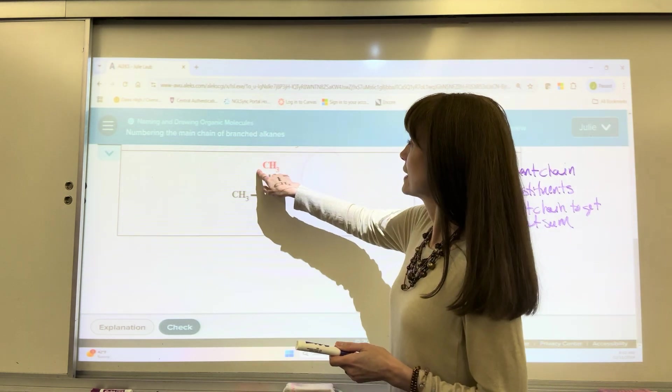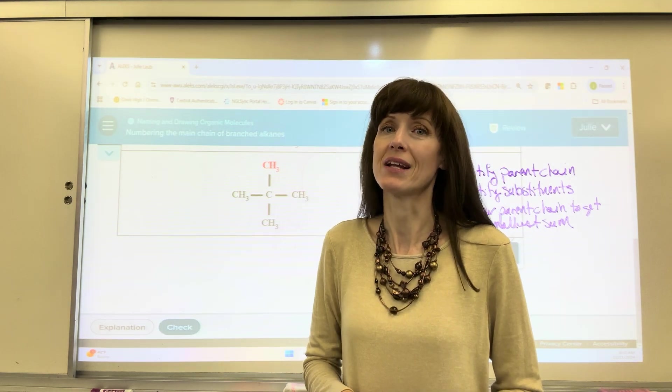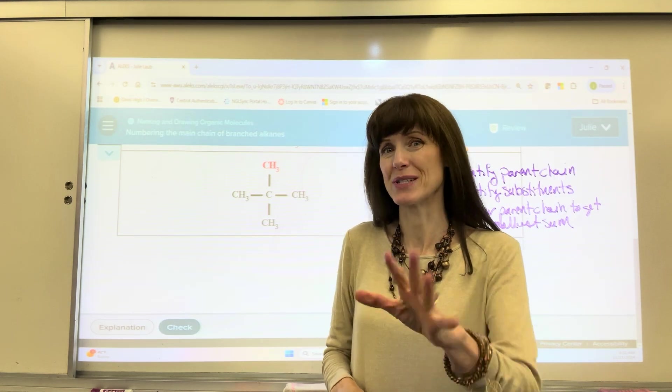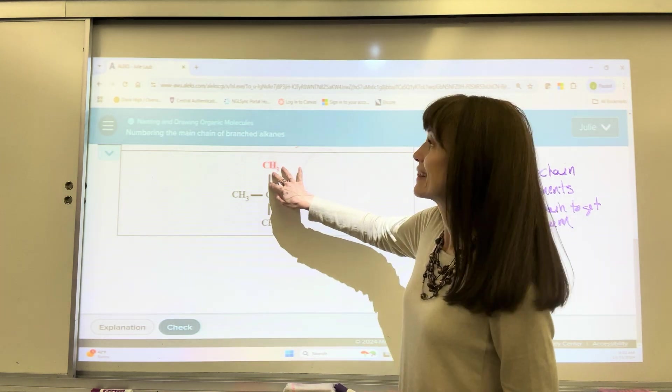So when they give you the highlighted red, make sure that that's not part of the parent chain. They're telling you, hey, that's a substituent. So I'm sorry, we wouldn't number this 1, 2, 3.